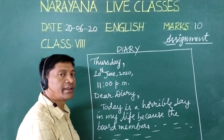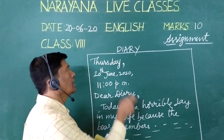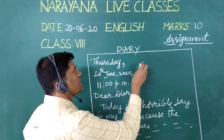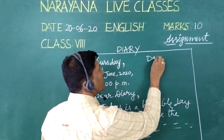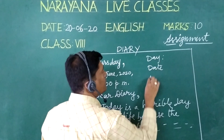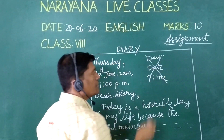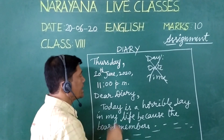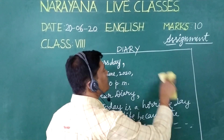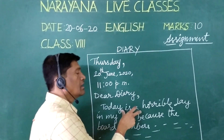So in this way we can write the diary. This is the format: day, date, time. Some students have the habit of writing day, date, and time differently — that is absolutely the wrong process. We should not use that method. This is the correct process. So remember, in this way we have to write the diary entry and the feelings.